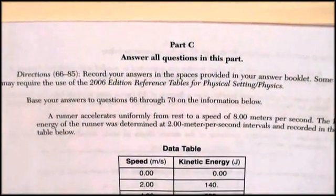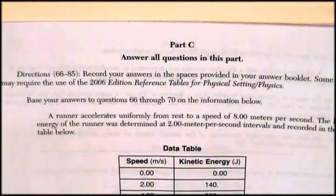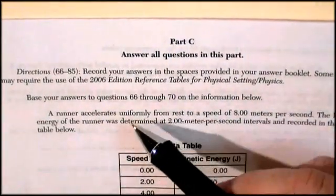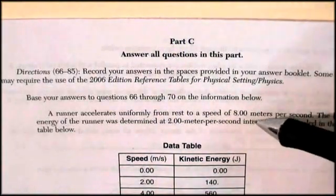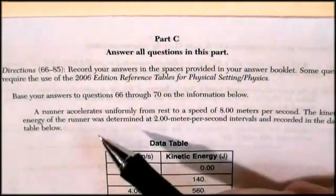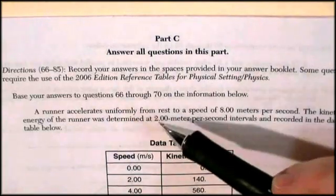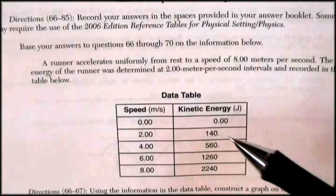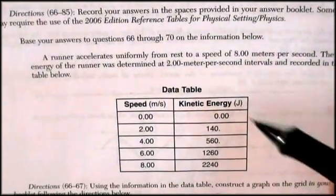We're going to answer these questions and show our work on our formula answer sheet. This is questions 66 through 70. A runner accelerates uniformly from rest to a speed of 8 meters per second. The kinetic energy of the runner was determined at 2 meter per second intervals and recorded in the data table below, with the speed and the kinetic energy.